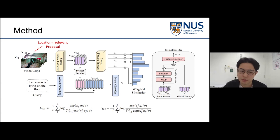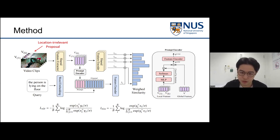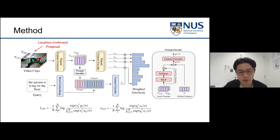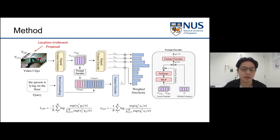In the testing phase, each video is first segmented into non-overlapping video clips, then fed into the trained model. Prediction is produced in the same way as proposal generation, and we select the proposal with the largest similarity as the final result.